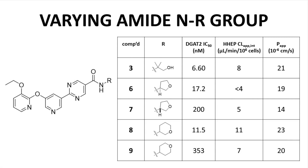This is a partial listing of the only table in the paper — Table 3 — that lists a number of compounds to show SAR within a series. Starting with compound 3, the three columns shown include target potency, intrinsic clearance, and apparent permeability. The researchers tried a number of different R groups on the amide. In the end, compound 6 was the only one that reasonably maintained potency, appreciably improved metabolic stability, and kept favorable permeability. Therefore, compound 6 became the new primary lead.